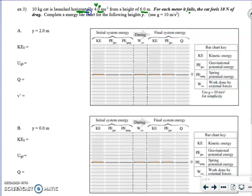We have a 10-kilogram cat is launched horizontally at a certain speed from a height of 6 meters. And for each meter it falls, the cat feels 10 newtons of drag. So drag is going to increase the more it falls. We want to complete an energy bar chart for the following heights. There's two different examples where the final height is 2 meters for part A, and the final height is zero for part B.